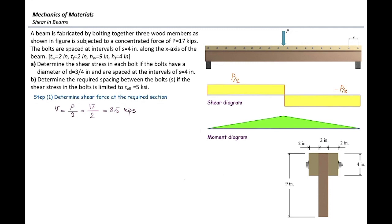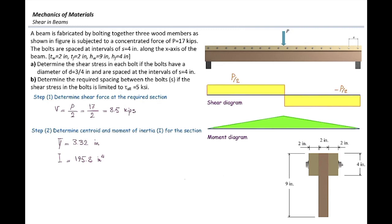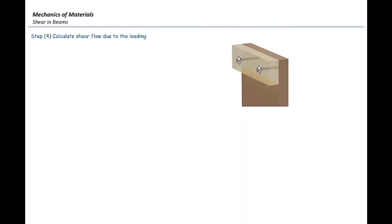The second step requires us to determine the section properties, including the centroid and moment of inertia. The distance from the centroid to the top of the section is 3.32 inches, and the moment of inertia for this section is 195.8 in⁴ about the horizontal axis. We consider the horizontal axis because the force acts in the vertical direction, so the axis of interest is horizontal. Now, let's focus on the built-up part of this beam to determine the required bolt spacing given the allowable stress of 5 ksi.